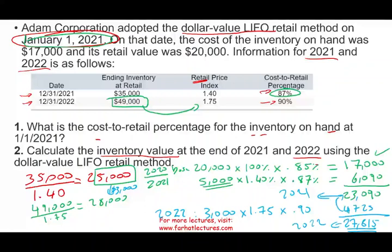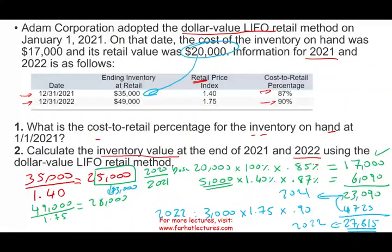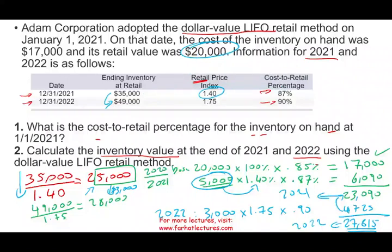To summarize: inventory at retail went from $20,000 to $35,000 — not really a large increase, because of the price index. Deflate $35,000 to $25,000 to compare to the beginning of the year — only a $5,000 true increase. Reflate that new inventory by the price index, then multiply by the cost-to-retail ratio to report at cost. For 2022, inventory went from $35,000 to $49,000 at retail — again, mostly inflation. Deflate, find the true increase of $3,000, reflate at 1.75, then multiply by 0.9 to get true cost.